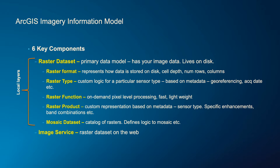This is the conceptual model — how imagery is represented in ArcGIS. You have a raster data set that represents all your image data. There's a raster format, which refers to how data is written to disk — whether it's band interleaved or band interleaved by pixel or by line, what is the cell depth, and the number of rows and columns. And then there's a raster type, which is logic based on a particular sensor type.